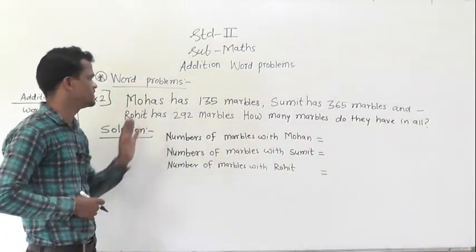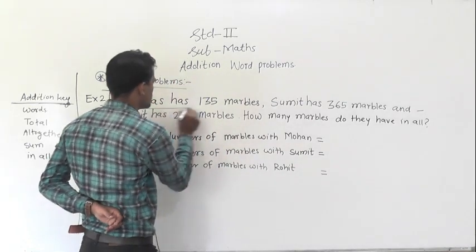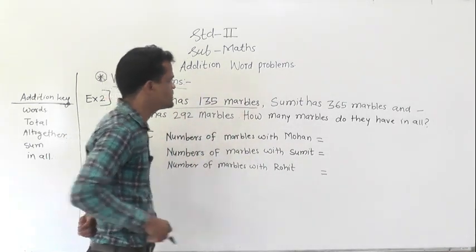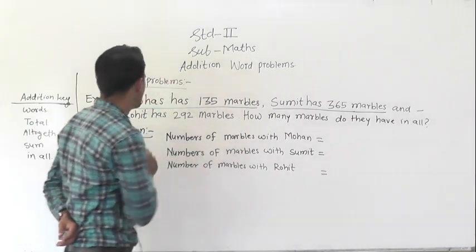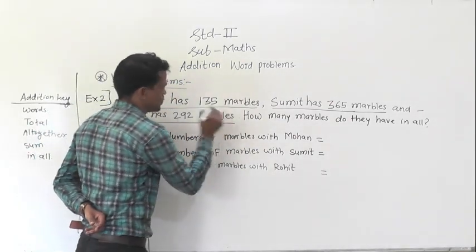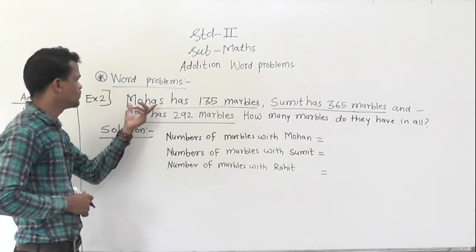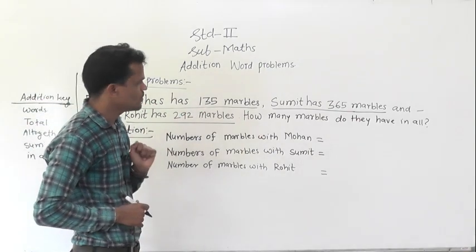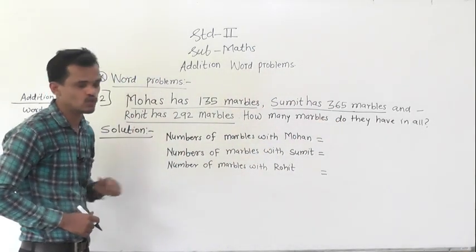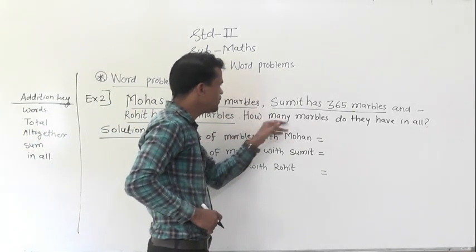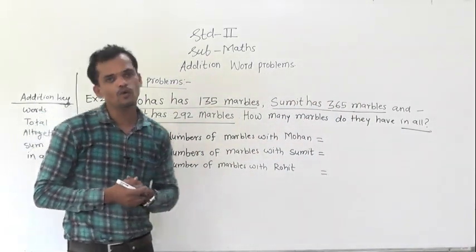Now, Example 2. Read this question: Mohan has 135 marbles, Sumit has 365 marbles, and Rohit has 292 marbles. How many marbles do they have in all?